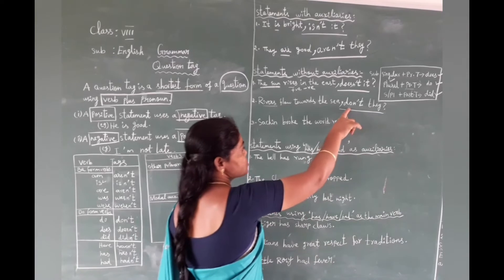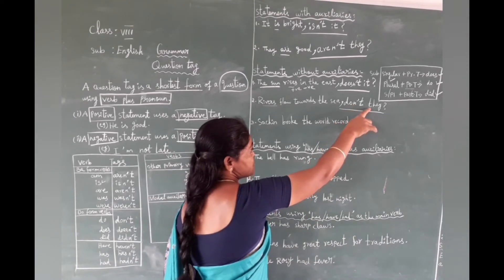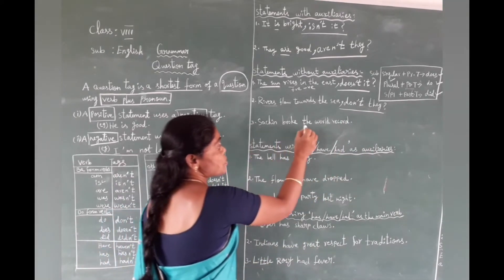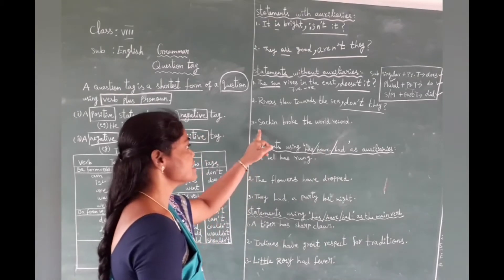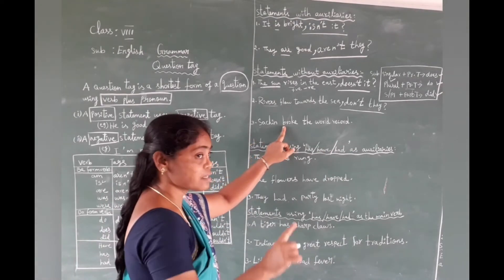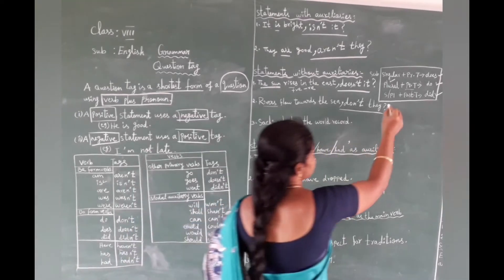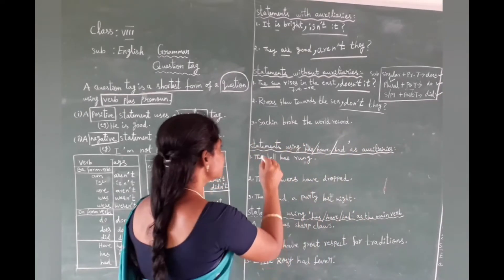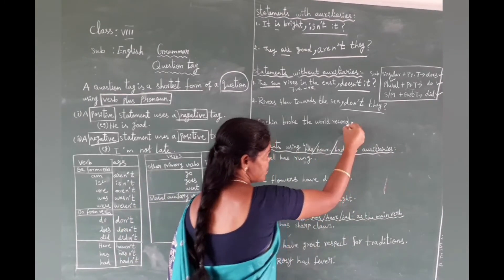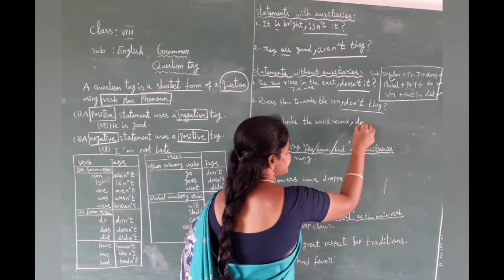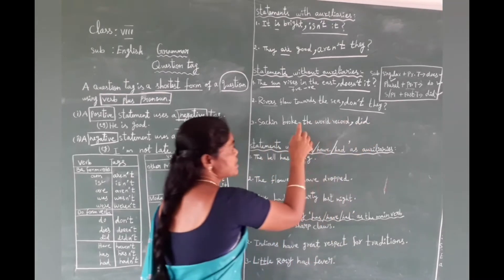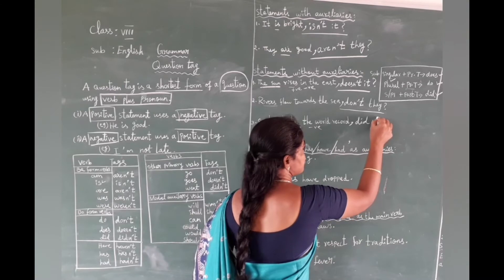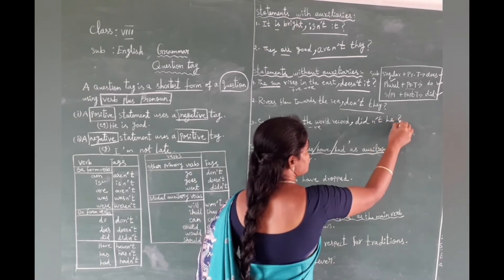Remember: after the comma, always use a small letter for the tag — don't use a capital letter. Next example: 'Sachin broke the world record.' Here 'broke' is past tense, and the subject 'Sachin' is singular. For past tense, we use 'did'. The given statement is positive, so the tag is negative: 'didn't'. The subject pronoun is 'he'. Tag: 'didn't he?'